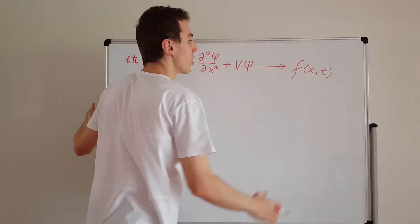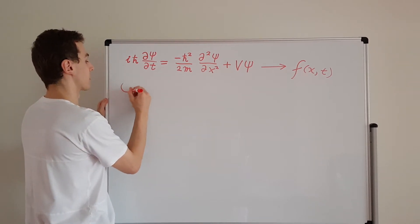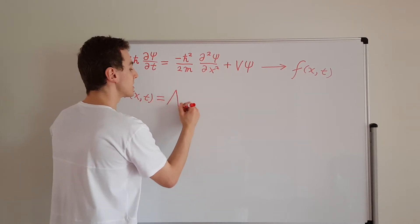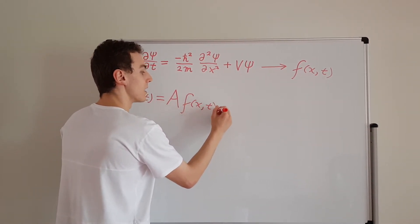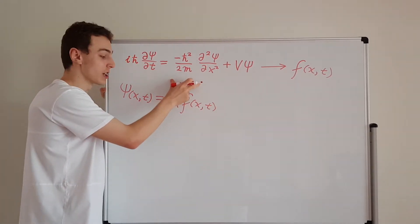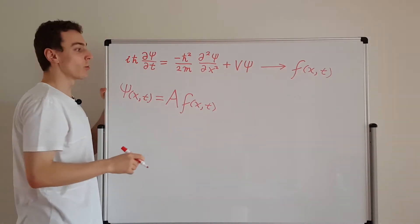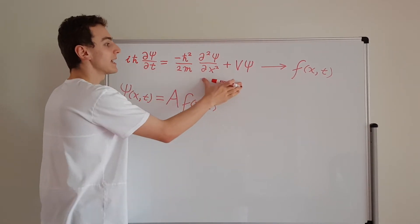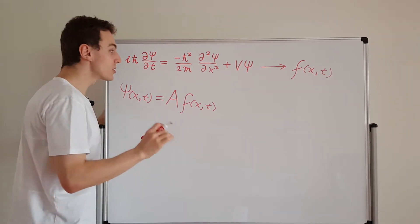If we take this function, we can define our normalized wave function psi of x and t to be some constant a times f of x and t. It's actually safe to say that if f satisfies the Schrodinger equation, then a times f also has to satisfy the Schrodinger equation. Let's take a closer look at why that is the case.